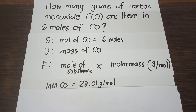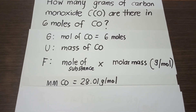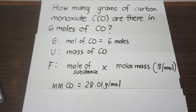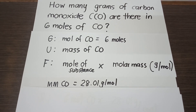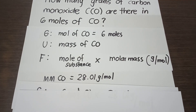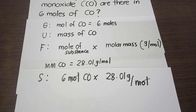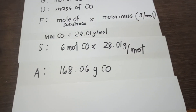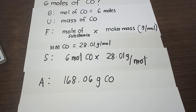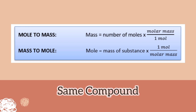Since we now have the molar mass of carbon monoxide and the given moles, we substitute: 6 moles of CO times 28.01 grams per mole. Cancel the same units, and the final answer is 168.06 grams. That is how you convert mole-to-mass or mass-to-mole for the same compound.